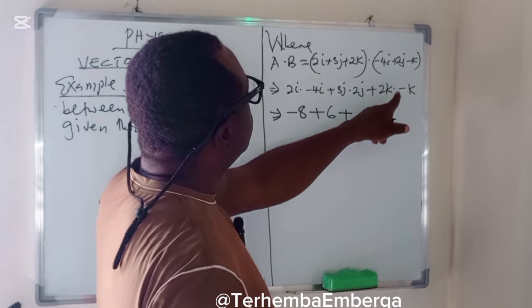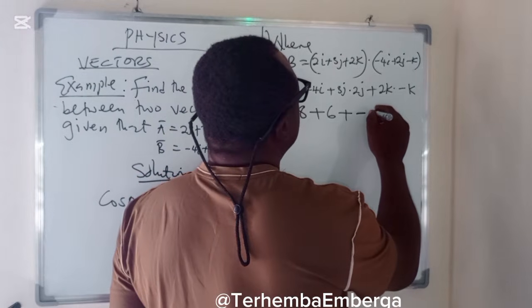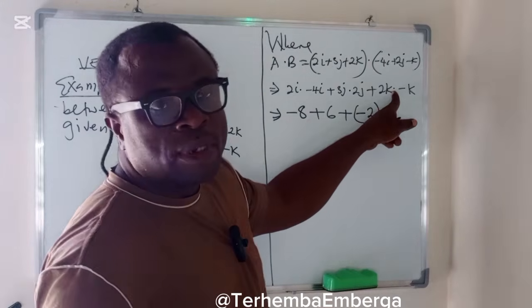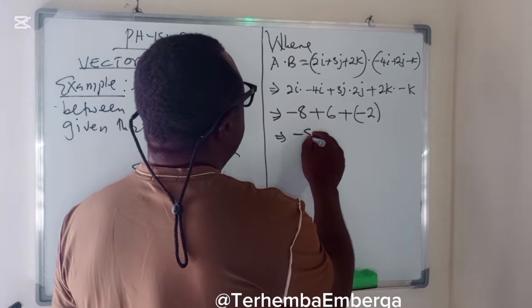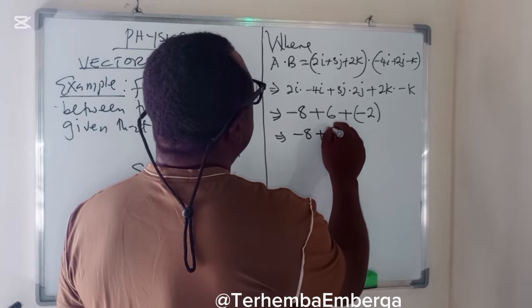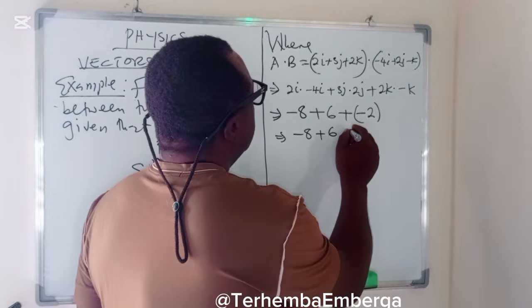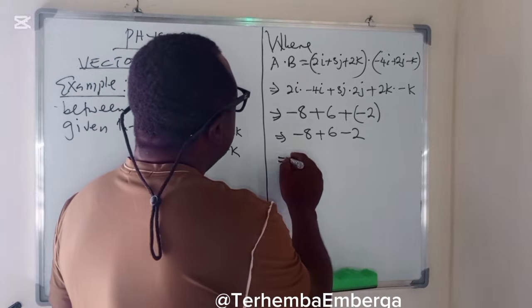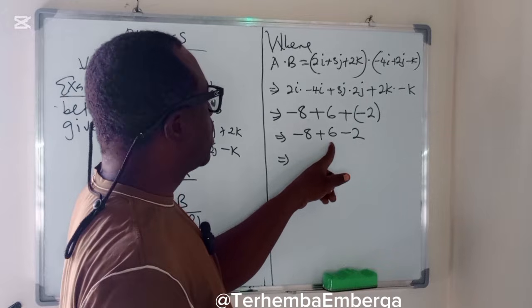Plus 2 times minus 1 is minus 2, because K multiplied by K is 1. So we can evaluate this as minus 8 plus 6 plus minus. Multiplication is minus, and becomes minus 2.